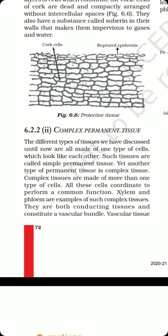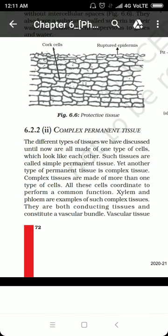There are two complex permanent tissues we will study: xylem and phloem. Xylem is a tissue in the plant body meant for conducting water and minerals from roots to all parts of the plant — that means it provides upward movement of water and minerals absorbed by roots from the soil to parts like leaves, where photosynthesis takes place using water and CO2 under sunlight.